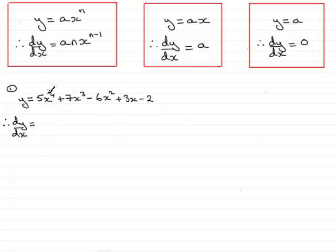For the first term, it's like Ax to the power n. All I need to do is multiply the power by the number in front of x. So that would be 4 times 5, which is 20. And reduce the power of x by 1, so that's x to the power 3 — giving 20x cubed.